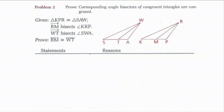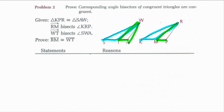Looking at problem two, I want to prove that corresponding angle bisectors of congruent triangles are congruent. Looking at my diagram, if I have congruent triangles, it's asking me to show that segment WT is congruent to segment RM, because those are the angle bisectors of the congruent triangles. Notice that these two angle bisectors create two different triangles in my whole triangle: triangle SAW and triangle KPR. It creates triangle STW that corresponds with triangle KMR, and it also creates triangle ATW with triangle PMR. So if I can prove that either set of these corresponding triangles are congruent, then I could use CPCTC to show that segment RM is congruent to segment WT.